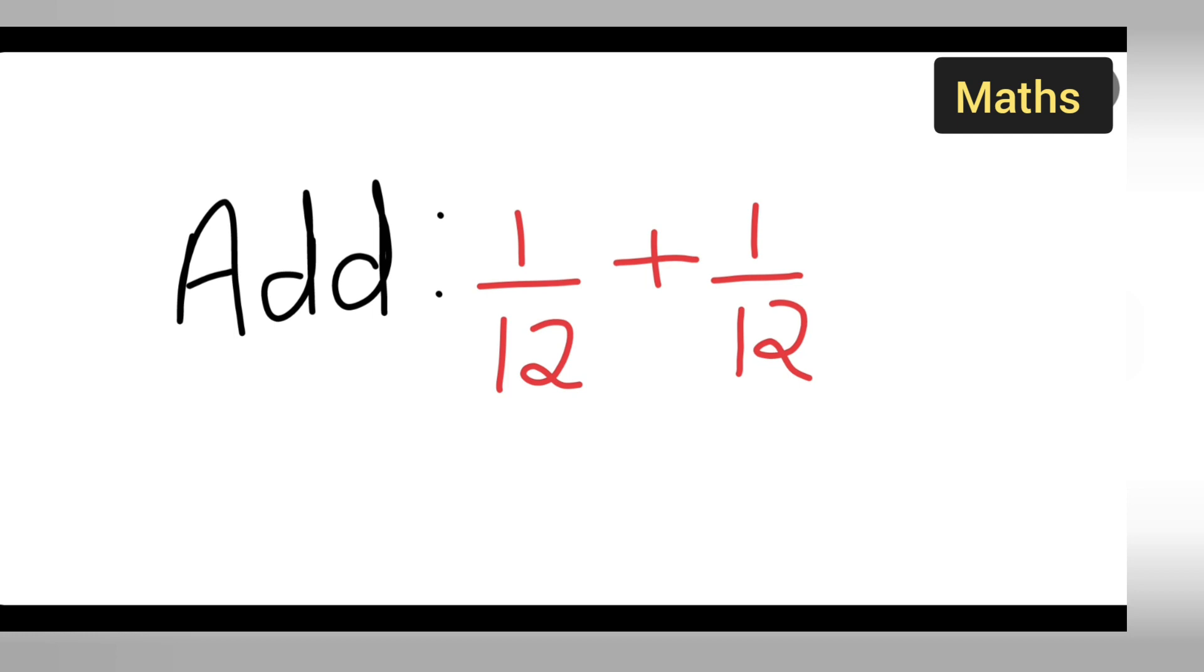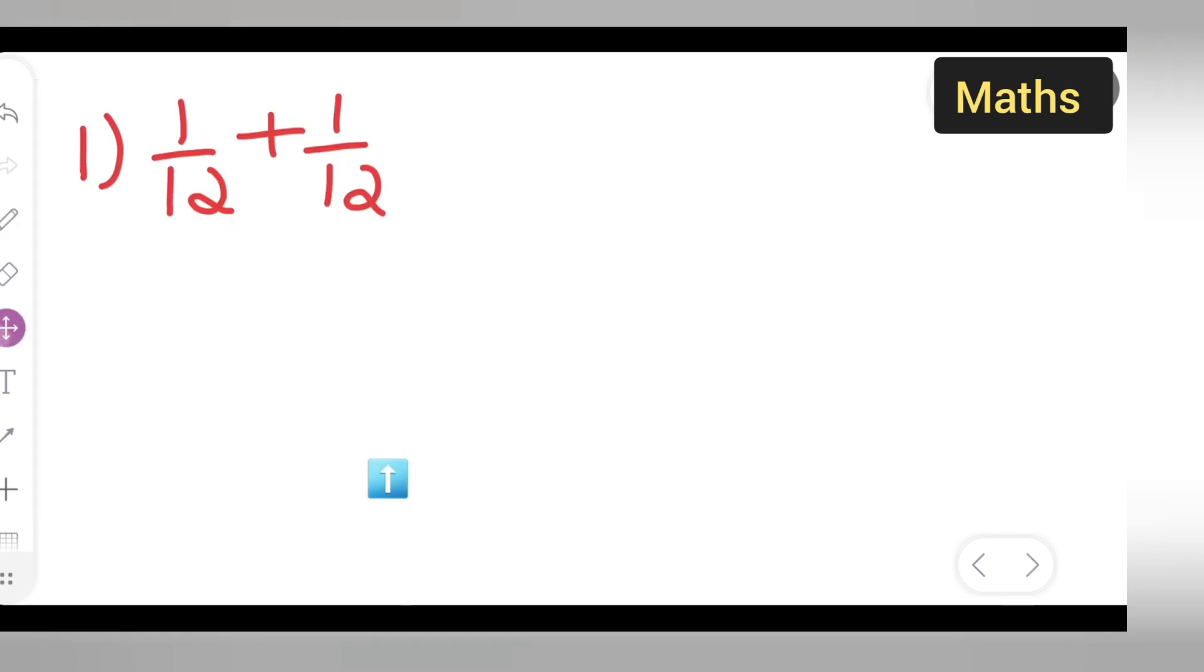Here the denominators are same, right? So what we are going to do is first write down this. Add 1 upon 12 plus 1 upon 12.